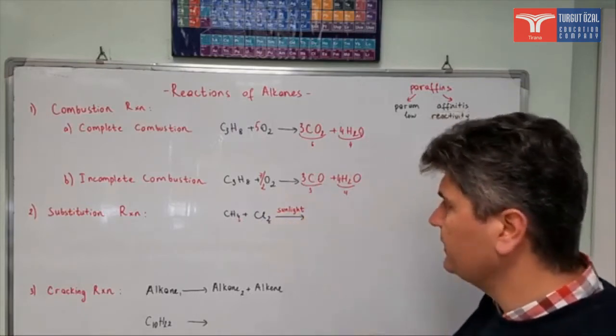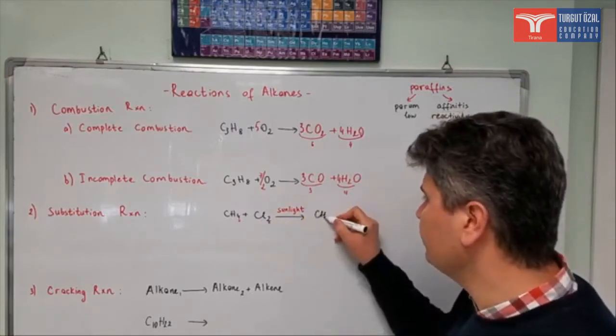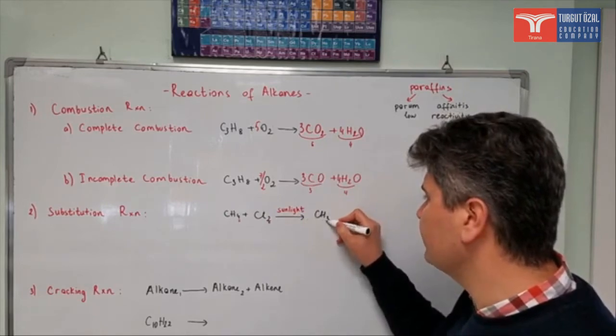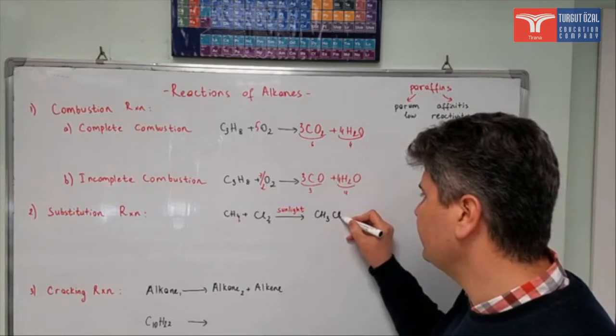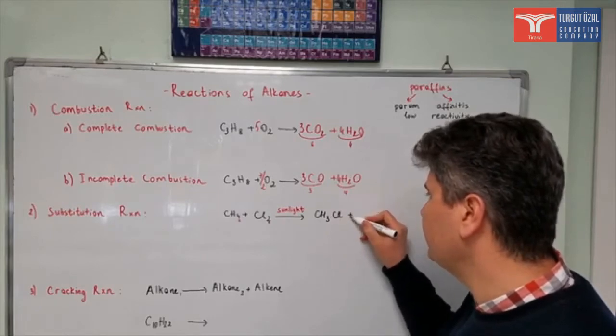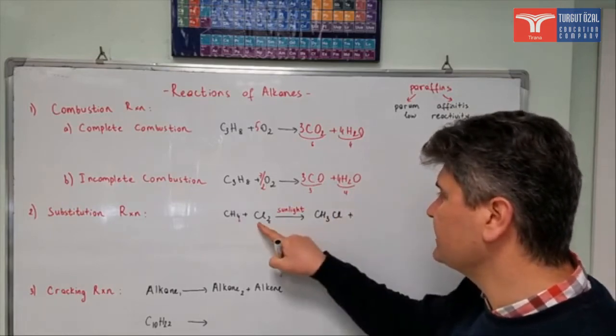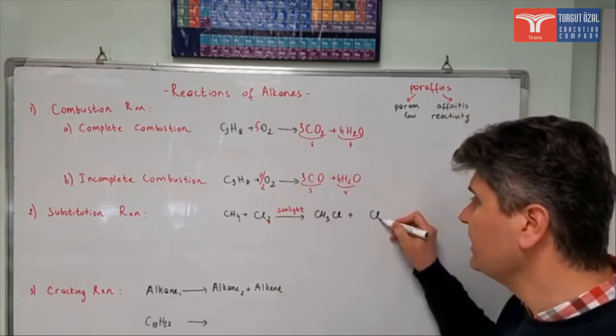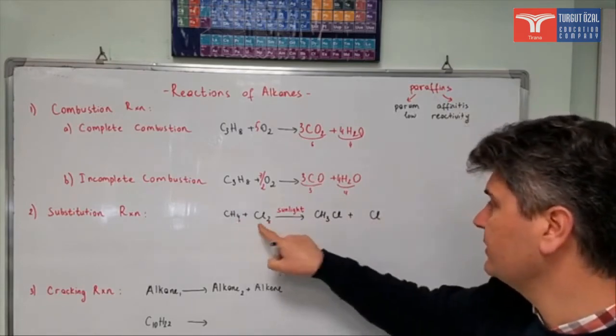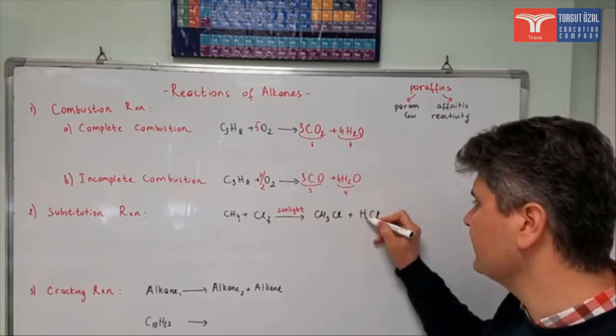So it's going to give us CH3. It was four, one is gone, so CH3. What came to the place of that? A chlorine atom. Then the second compound, it was Cl2 at the beginning. One Cl is gone, so one Cl is left. And one hydrogen came here, so it's going to be HCl in here.